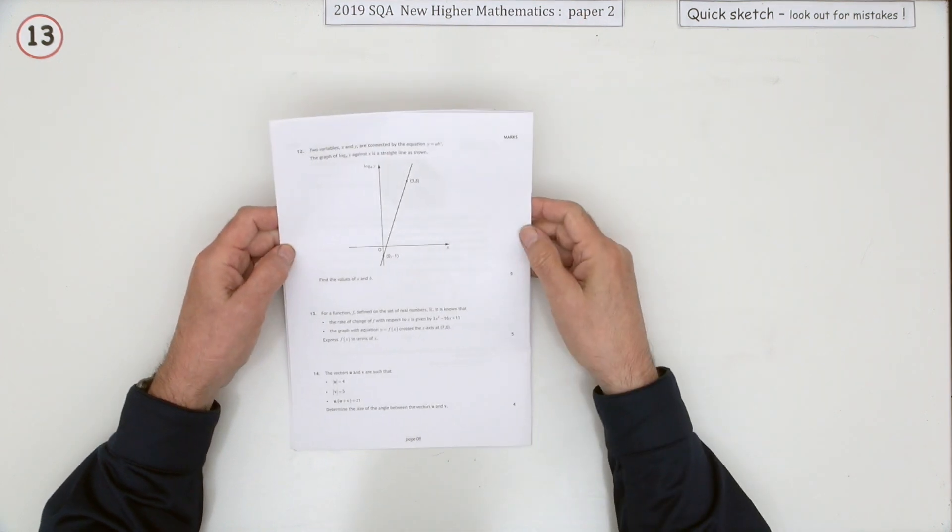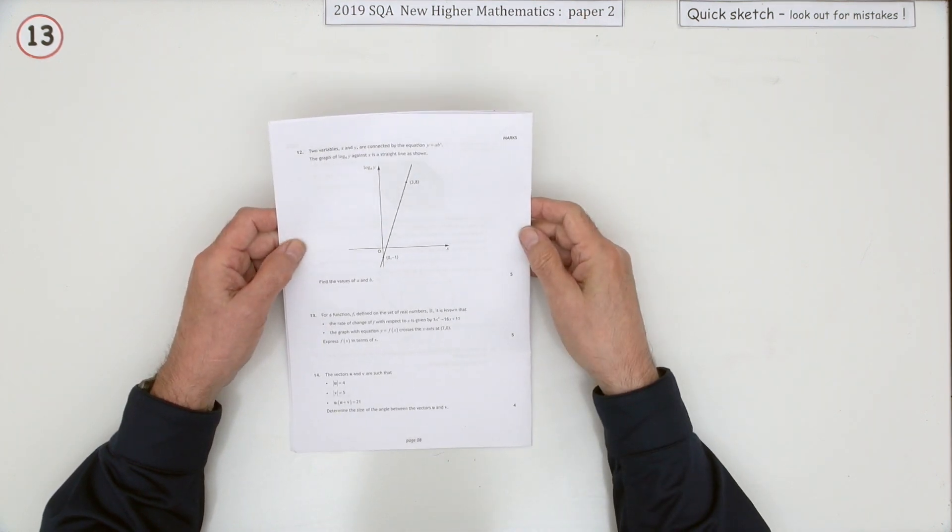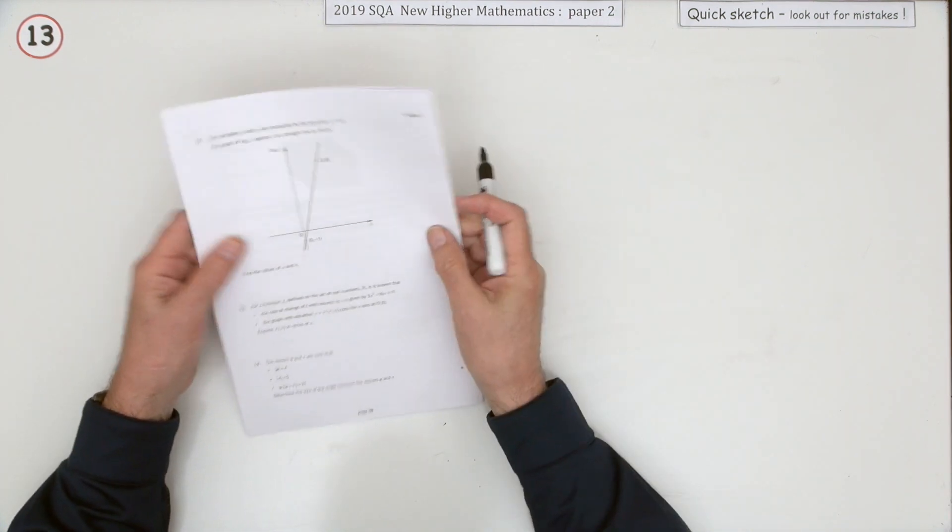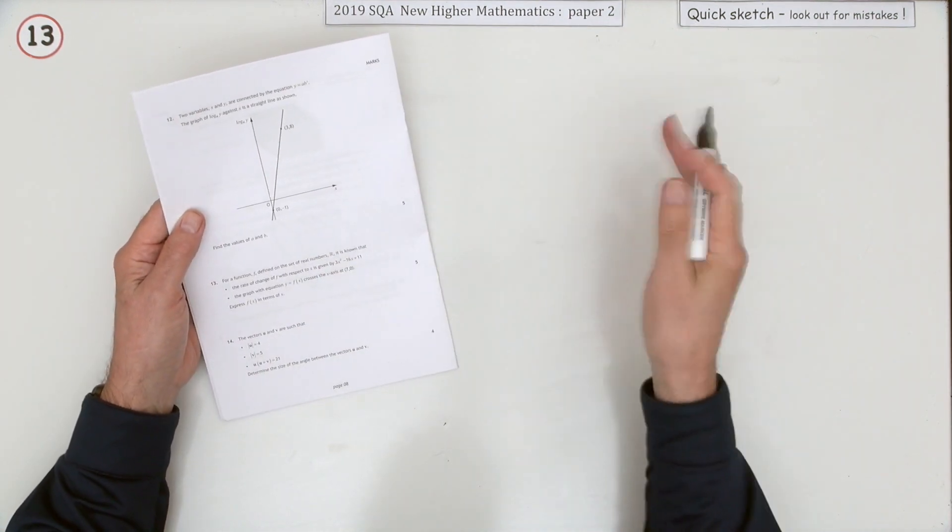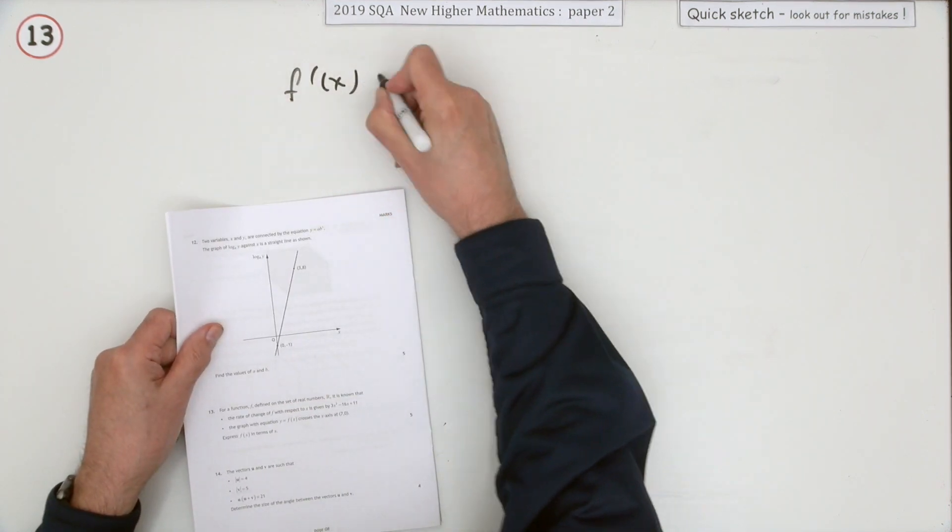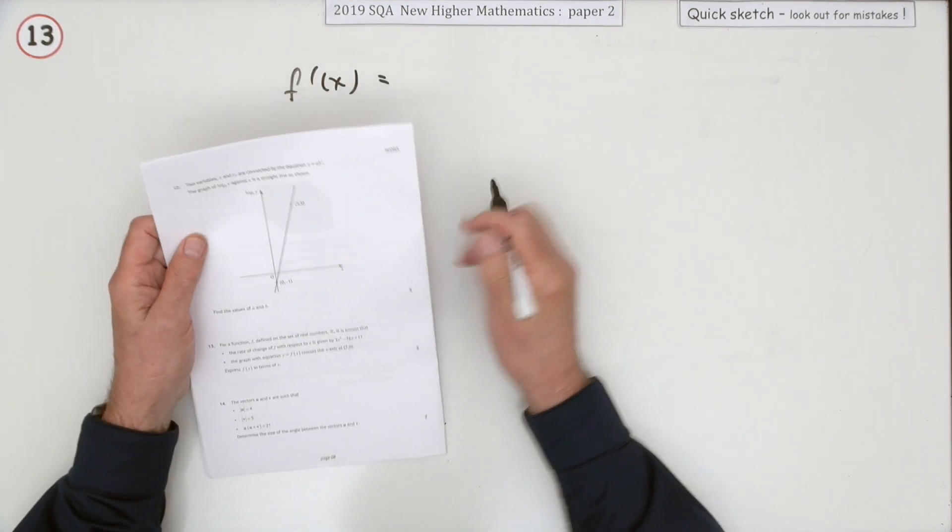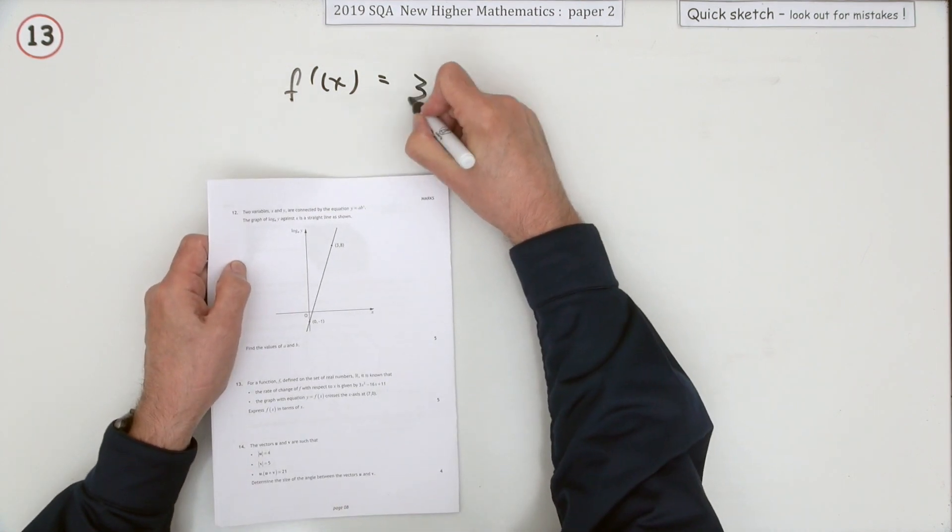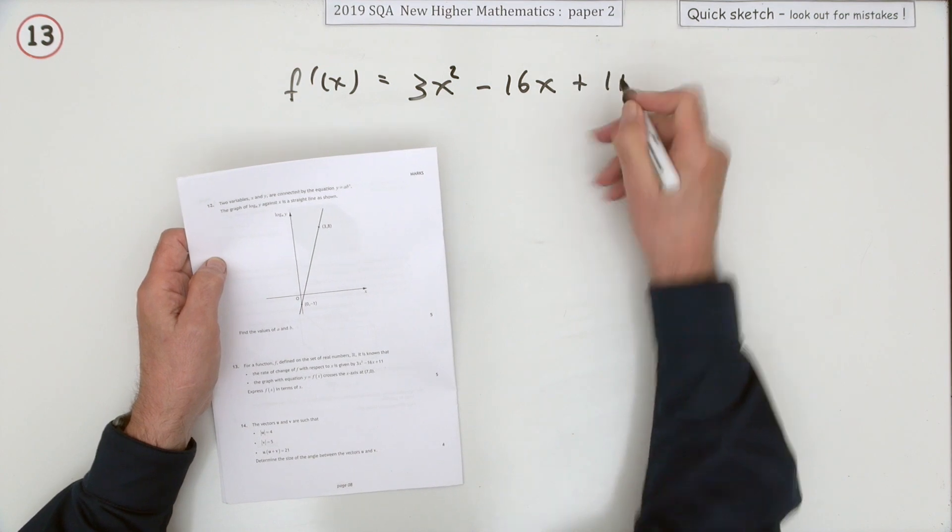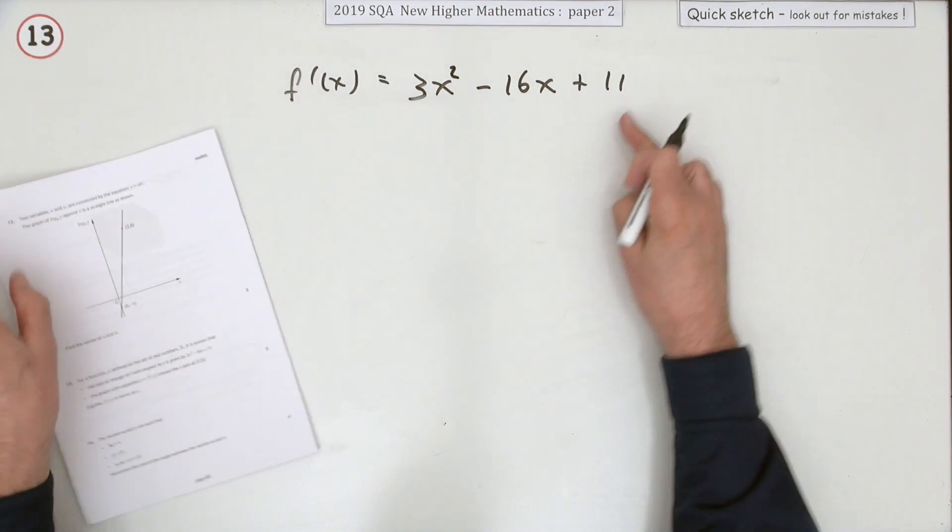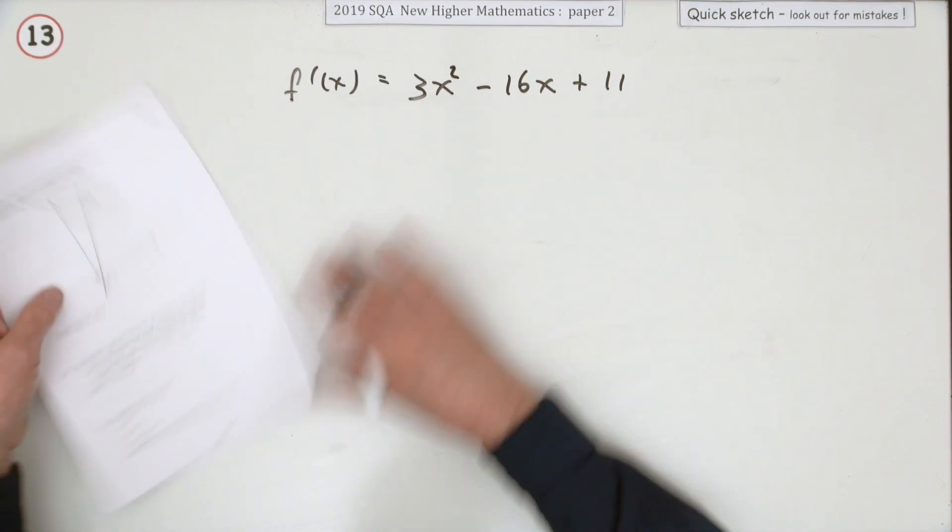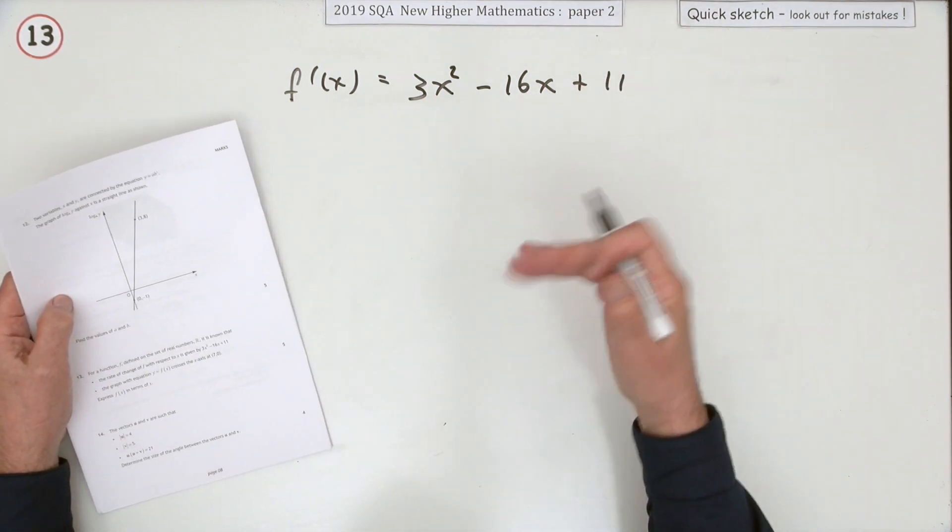Number 13 from paper 2, the 2019 Higher Maths five mark question on functions. A function is defined, the rate of change, that's the important bit. The rate of change of f with respect to x is given by 3x squared minus 16x plus 11. So straight away you know it's going to be find the original function, it's a differential equation where you integrate this back up to the original form.